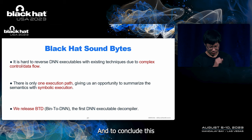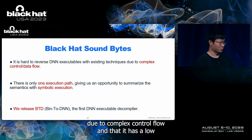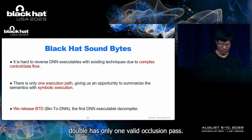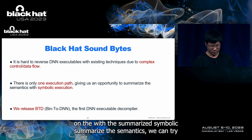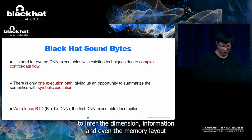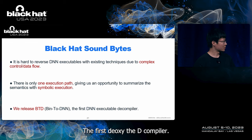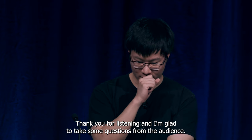To conclude, here are three takeaways. First, reversing DN executables with existing techniques is hard due to complex control flow and data flow. Second, DN executables have only one valid execution path, giving us an opportunity to summarize semantics with symbolic execution, and with the summarized semantics we can infer dimension information and even memory layout. Overall, we propose and release BTD, the first DN executable decompiler. Thank you for listening, and I'm glad to take questions from the audience.